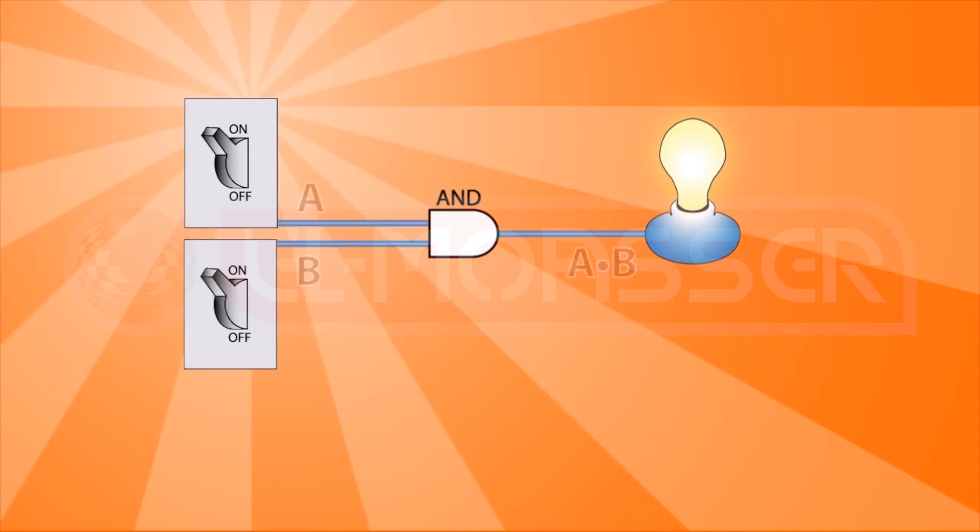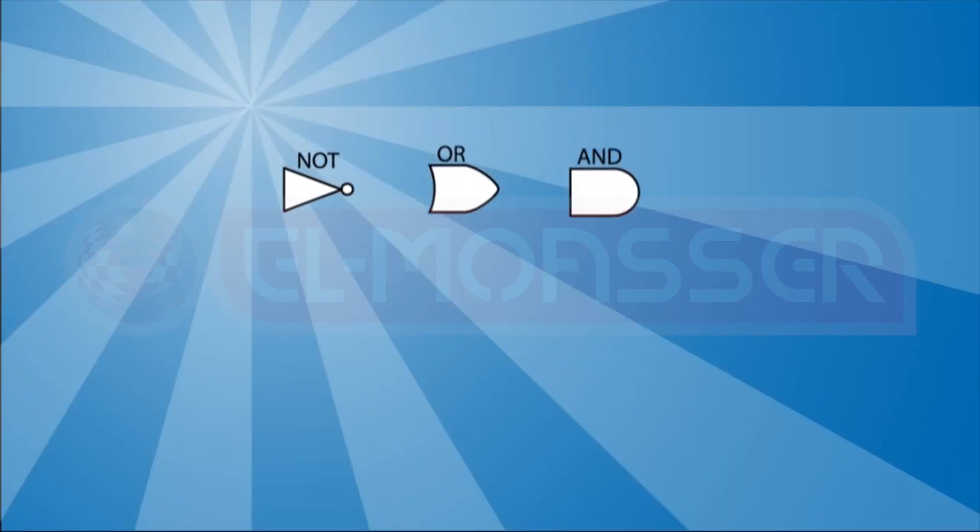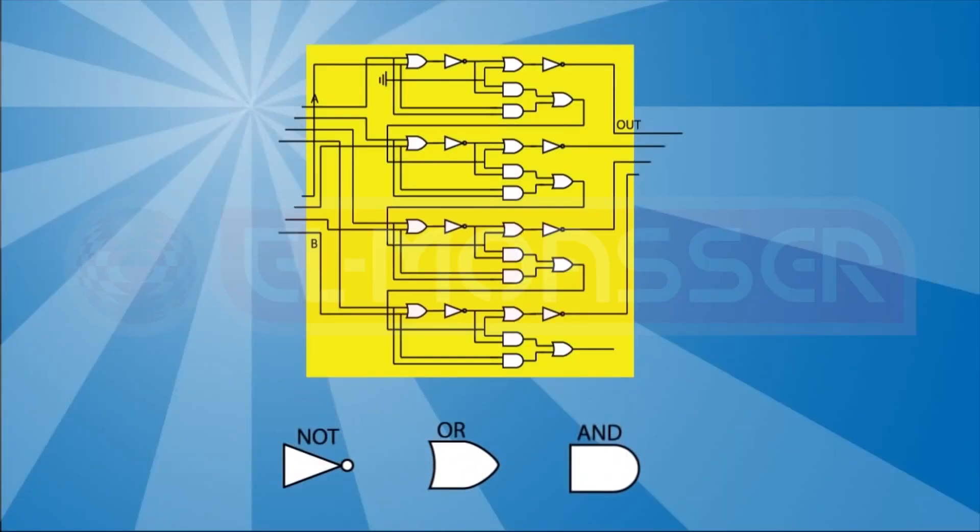This is the AND gate. The output A and B is one if both inputs are one. If any or both of the inputs are zero, the output is zero. Now with these gates, an engineer can design very complicated behaviors.